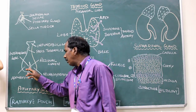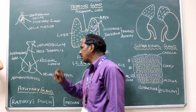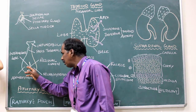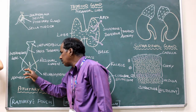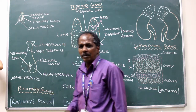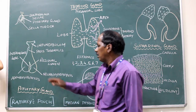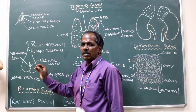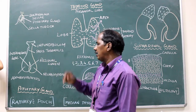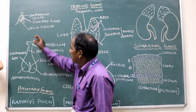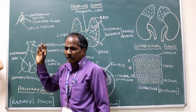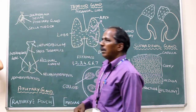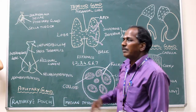There is a gap or space between the two lobes known as residual lumen. Between the anterior lobe and the residual lumen, this area is known as the intermediate lobe of the pituitary gland. The adenohypophysis near the infundibulum presents an elevation known as pars tuberalis. The gland is covered by a fold of dura mater known as diaphragma sellae.